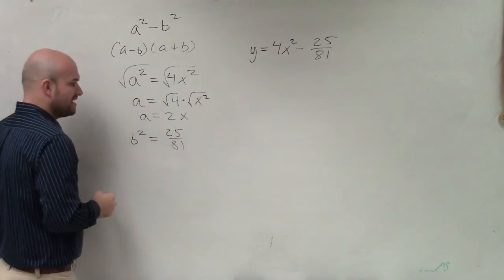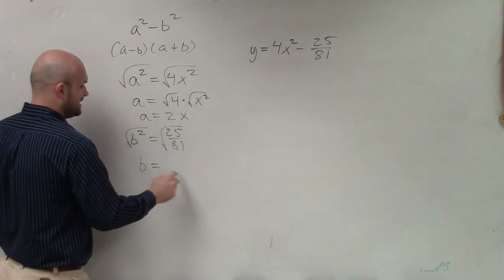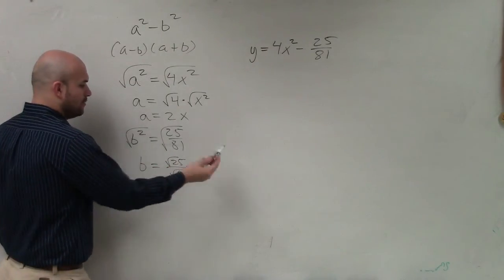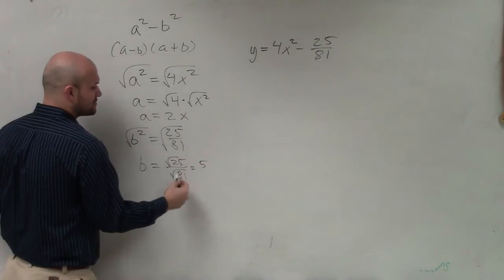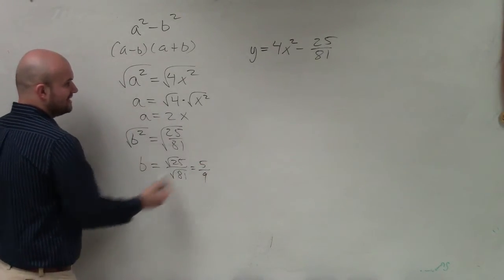Now to take the square root of 25 over 81, I have b equals, again, that can be rewritten as the square root of 25 over the square root of 81. Well, the square root of 25, that's 5. The square root of 81 is 9. So therefore, a equals 2x and b equals 5 over 9.